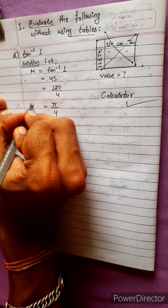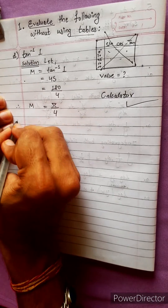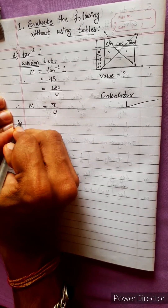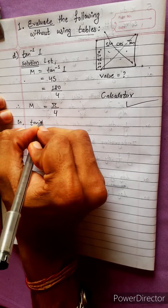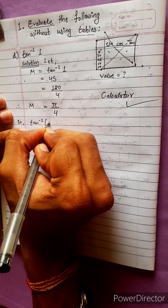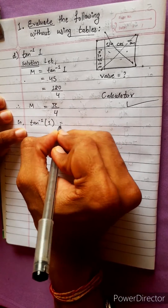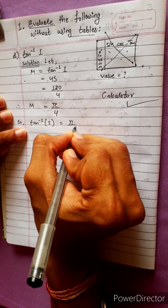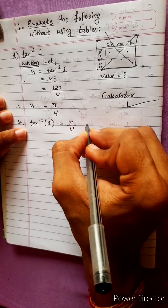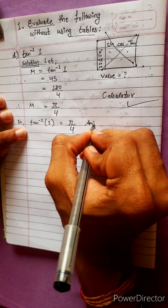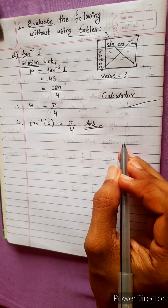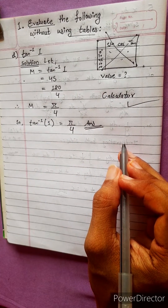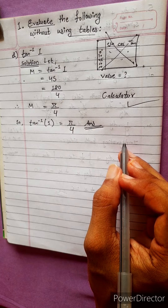Therefore, M equals π/4. So tan⁻¹(1) equals π/4. This is our answer. Now be ready for the next question.